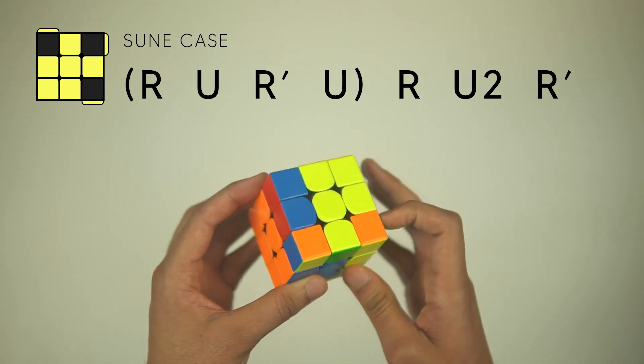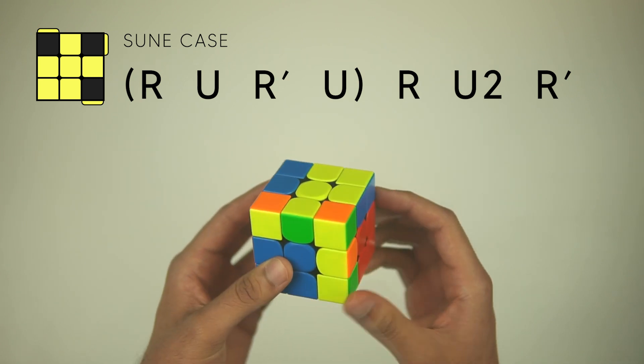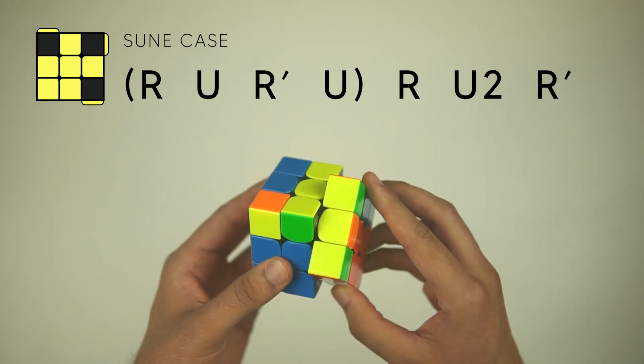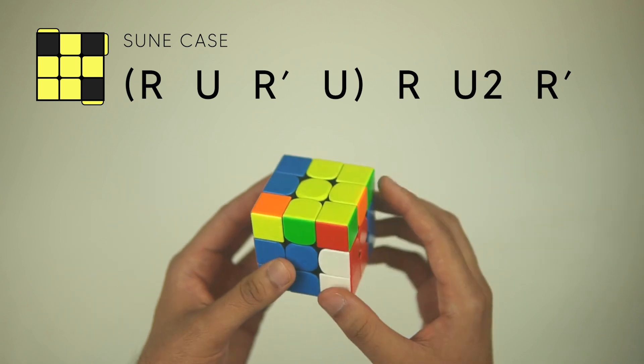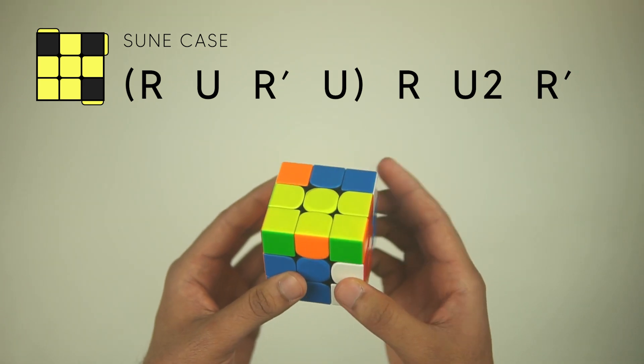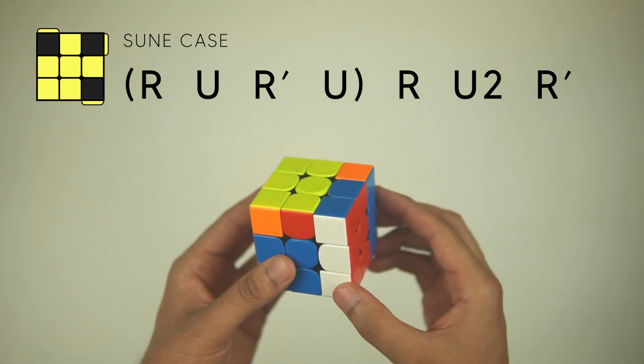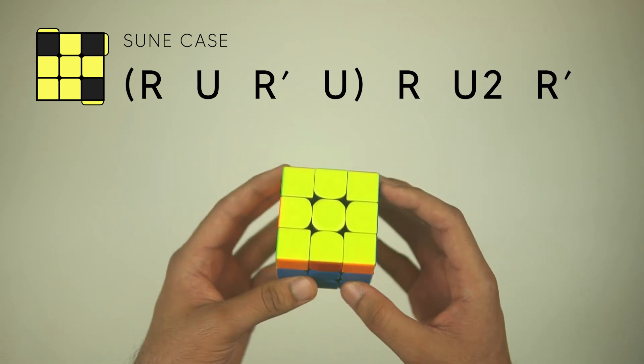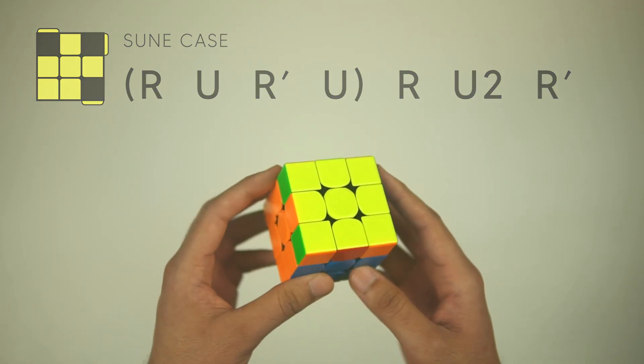Then we're going to move this F2L pair over by one, and then we're going to insert it back in by bringing the cross piece up with an R, do a U2 to connect it, and just input that F2L pair back in, and there it is, all done.